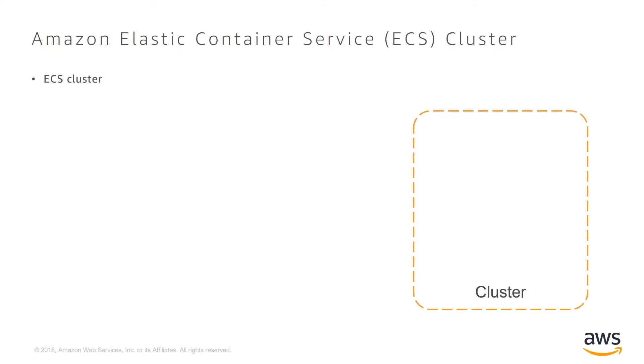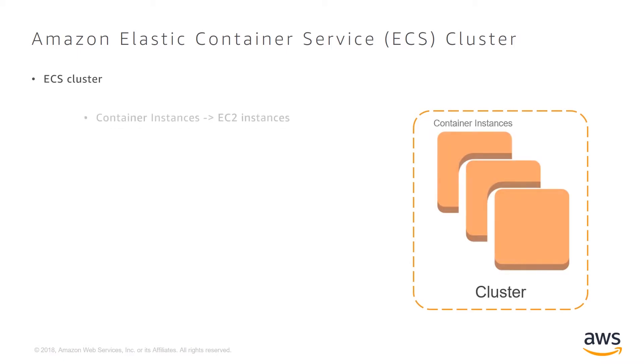ECS is a container orchestration service that supports Docker containers. Before we dive into deploying our .NET Core applications to ECS, let's take a look at how the ECS resources work together. First, there is the cluster, which is a logical grouping of our containers. The cluster then has container instances, which are EC2 instances that provide the compute resources for our cluster.